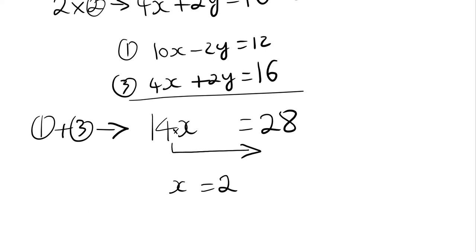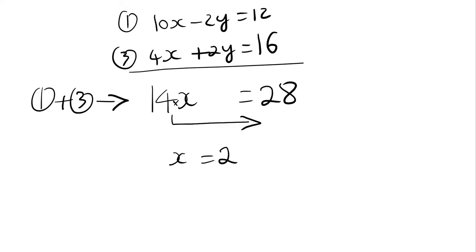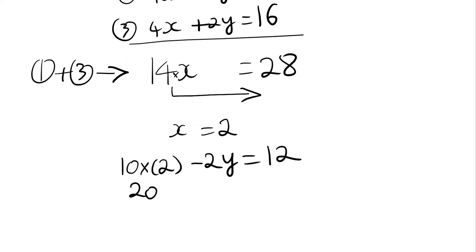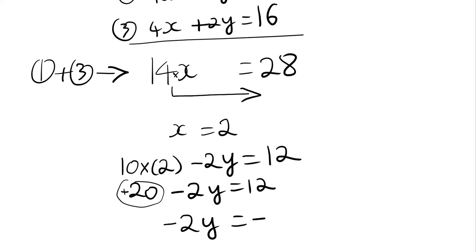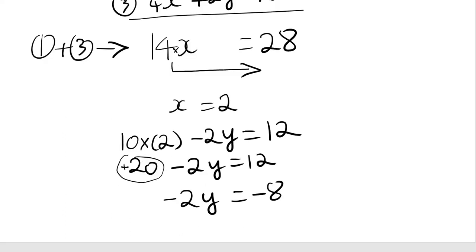To find y, I'm going to substitute x equals 2 back into equation 1. So I have 10 times 2 minus 2y equals 12, giving me 20 minus 2y equals 12. Taking the 20 over to the right, it becomes a minus: minus 2y equals 12 take away 20, which is minus 8. So y equals minus 8 divided by minus 2. A minus divided by a minus is a plus, leaving me with y equals 4.